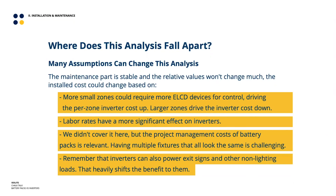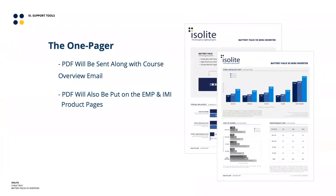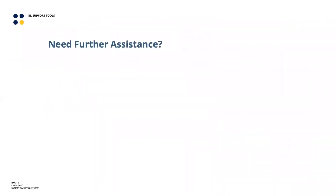The thing that really swings the analysis toward inverters is considering exit signs and potentially non-lighting loads. Since an inverter supplies AC power, if a facility has ventilation requirements for areas of refuge, or you can hang exit signs off the inverter, that heavily shifts the analysis in the inverter's direction. All this information will be presented on a one-pager sent out with this session and posted on the website.